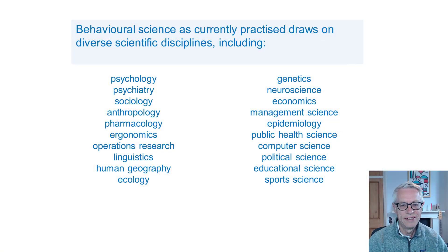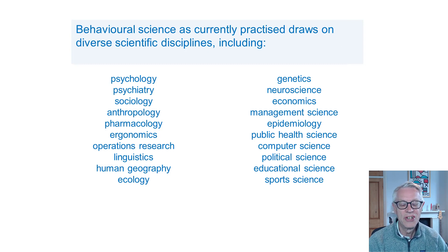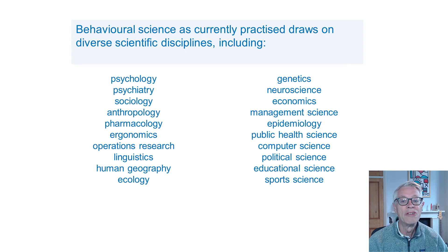As broadly defined, behavioural science draws on very diverse disciplines, including psychology, psychiatry, sociology, anthropology, pharmacology, ergonomics, operations research, linguistics, economics, genetics, neuroscience, management science, and computer science. All of these disciplines have parts of them which involve behaviour, involve building models of behaviour, making predictions, and even developing interventions to influence behaviour.